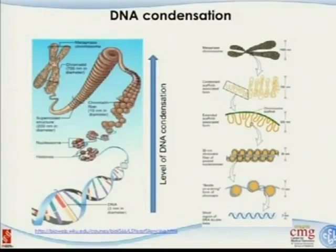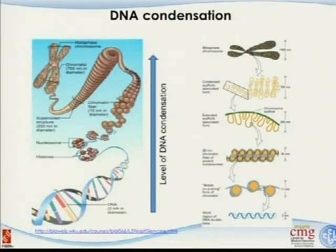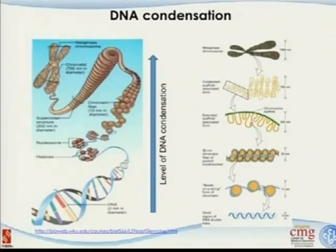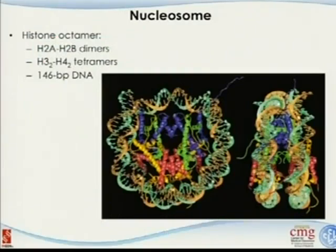The first one is histone modification. Let's review a little bit of biology about that. This is how DNA is organized — this is the chromosome at the entire level. If you zoom in, the DNA wraps around histones. Further zooming in, this is chromatin, and there are four different histones that the DNA double strand wraps around. You can see this is a double helix DNA, which wraps around the histones and becomes chromatin and then chromosome.